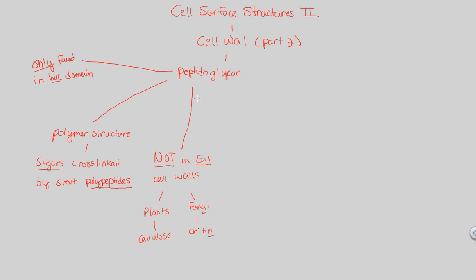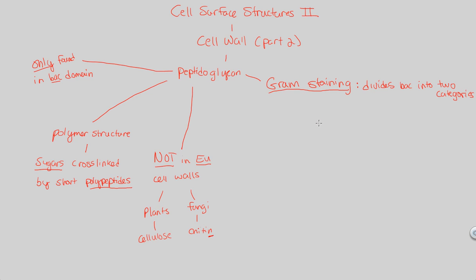So what can we do with this understanding of peptidoglycan? It's going to be a great way to classify bacteria, because peptidoglycan allows us to do something called gram staining - something you've probably heard of before. Gram staining is a process that divides bacteria into two basic categories, which is great for us as biologists because now we have two broad categories to separate a huge amount of bacteria further, based on their cell wall structure and peptidoglycan content.